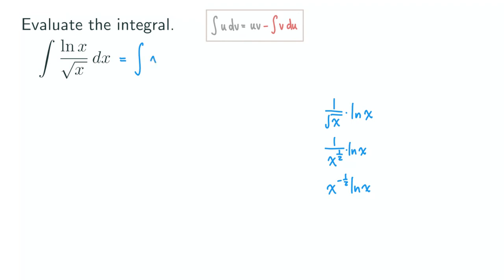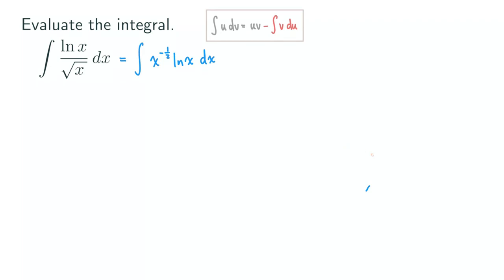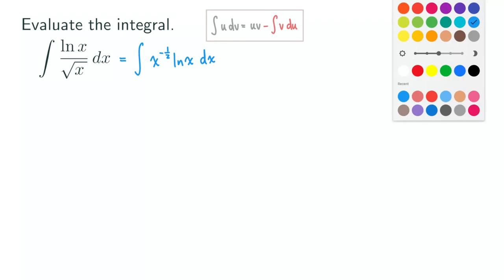Let's write that: we have x to the 1/2 times ln(x), and then dx. Since it's a product, we can now try the integration by parts technique and see what's going on.